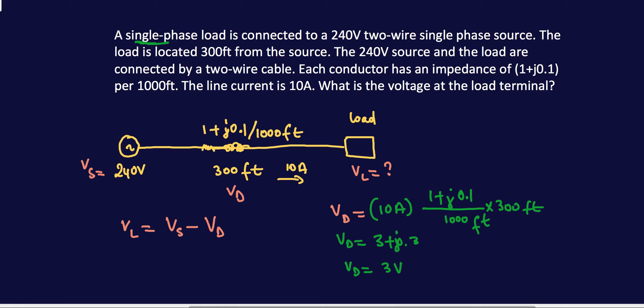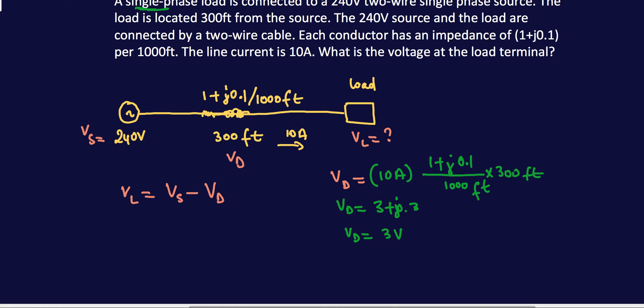So the current will actually flow through the neutral as well. It's not like a three-phase system. The neutral return current is equal to the phase current, so you have to take into account the return path. The voltage drop through the complete path is going to be whatever you have here times two, because you have to take into account for a single phase. The current flows through the neutral at the same time.